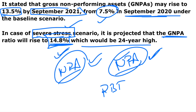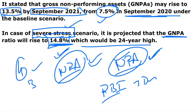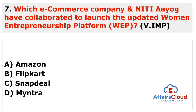Remember RBI's four deputy governors: Bibu Parashad Kanungo, Mahesh Kumar Jain, Michael Debabrata Patra, and M. Rajeshwar Rao, who was recently appointed in October.